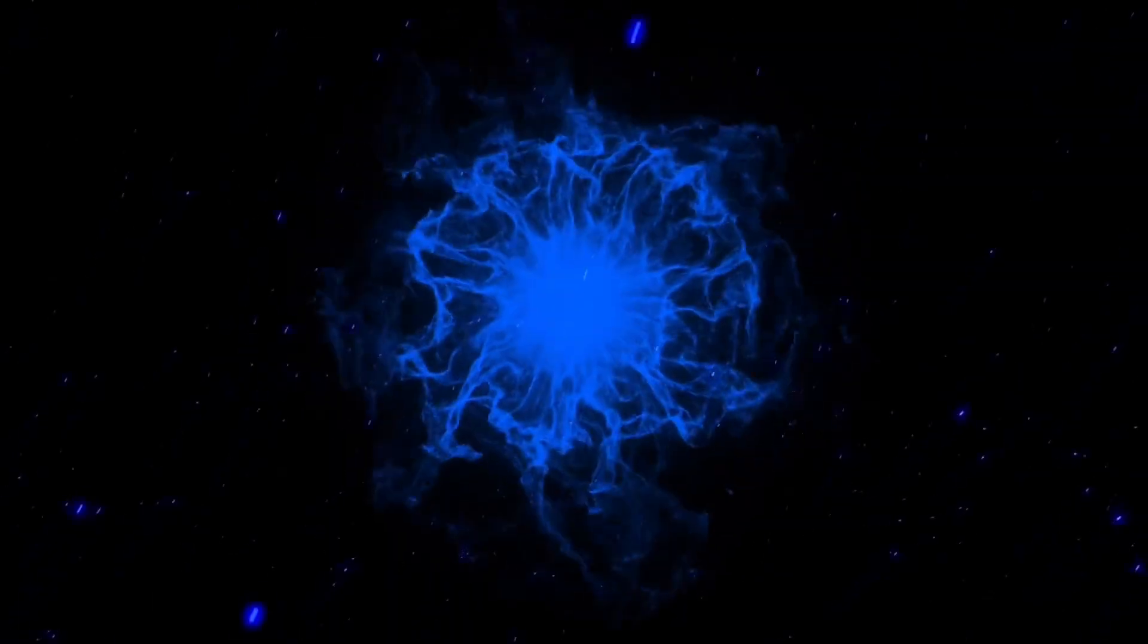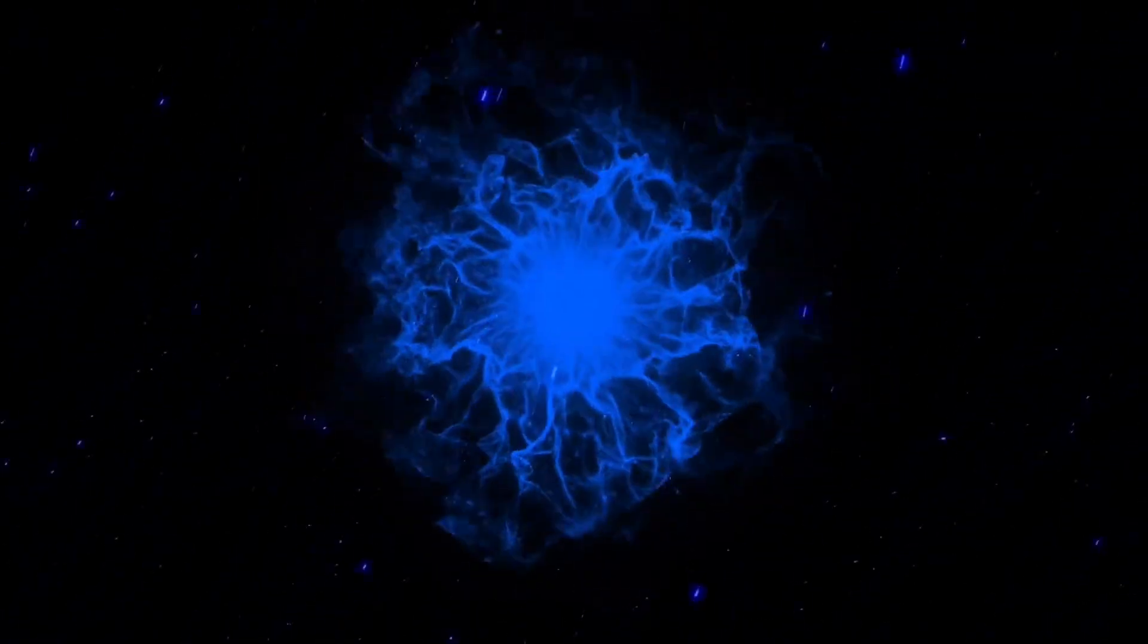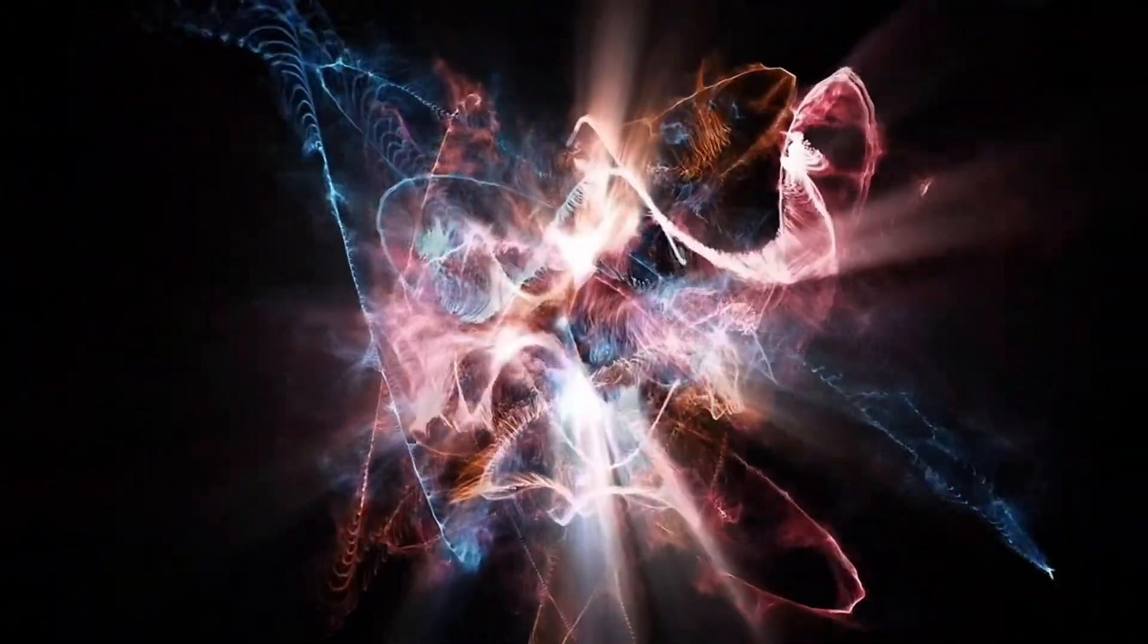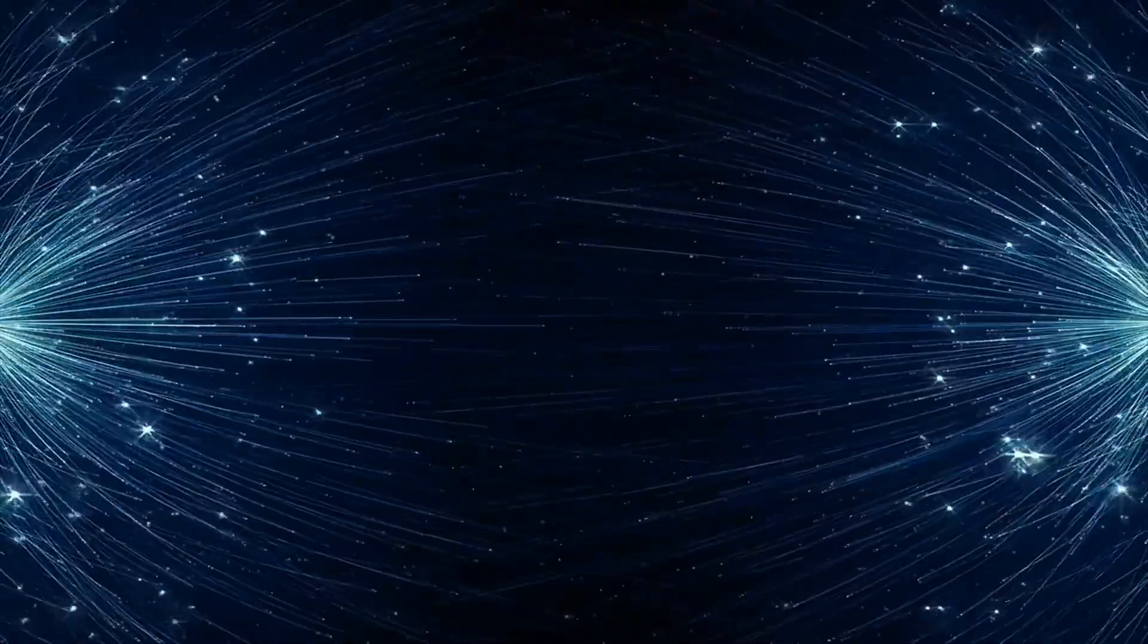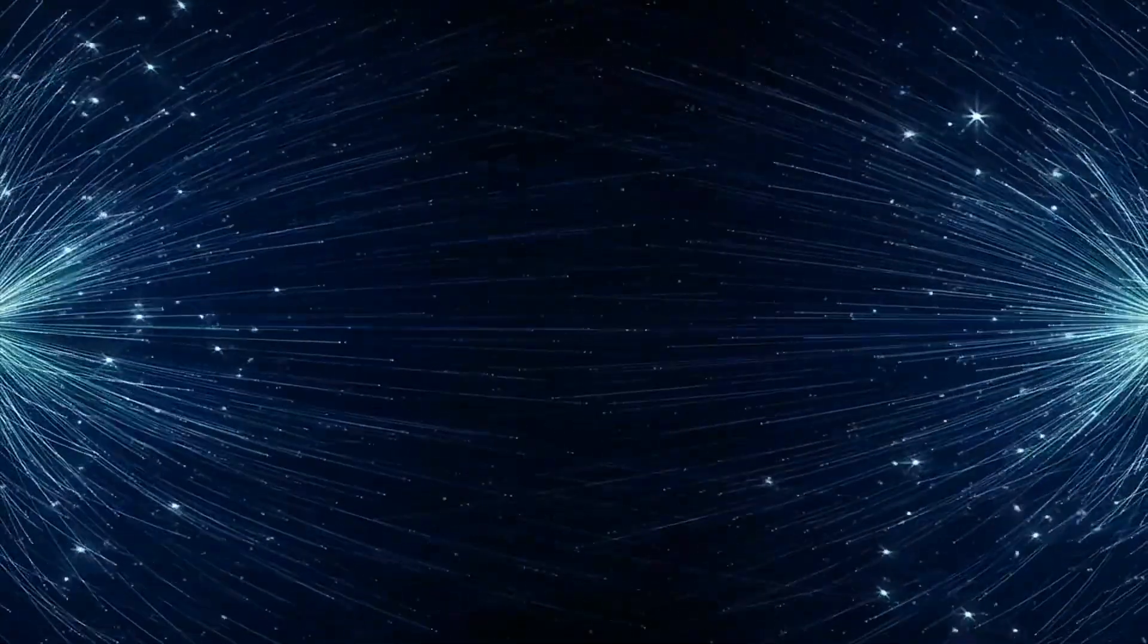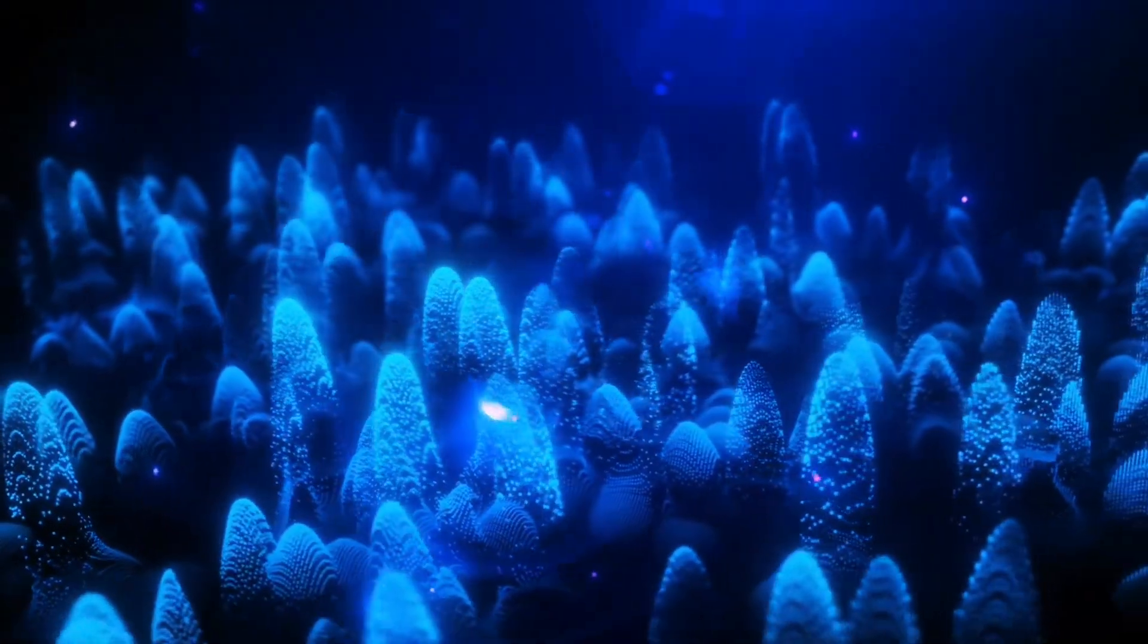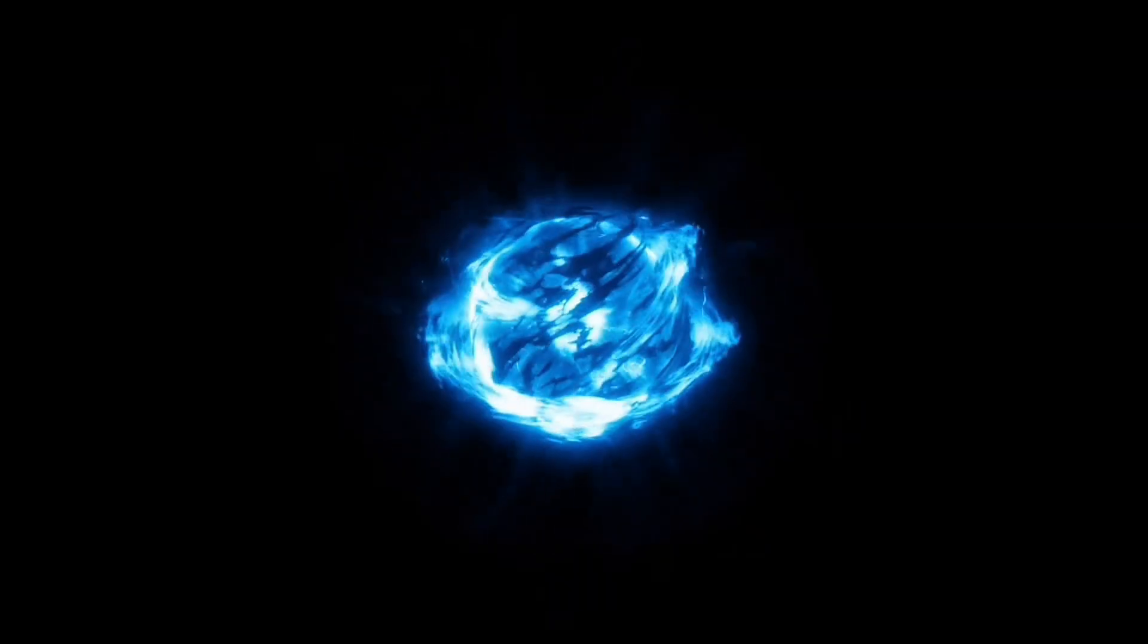Schwinger realized something profound. If you could apply a powerful enough electric field, those ghost particles could be torn apart before they vanished. The field would separate them so violently that they could no longer recombine, freezing them into reality. What was once temporary would become permanent. In essence, you'd be turning vacuum energy, the quiet hum of space, into actual matter and antimatter pairs.